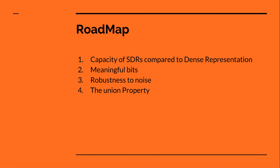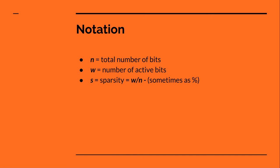The roadmap for this presentation: we're going to look at the capacity of SDRs compared to dense representations, the fact that every bit in a sparse distributed representation is meaningful, and a couple of properties including robustness to noise and the union property. Before we get into the details, let's talk about some notation. We're going to use N as the total number of bits, W as the number of active bits, and S as the sparsity, which is W over N — sometimes represented as a percentage of active bits over total bits.